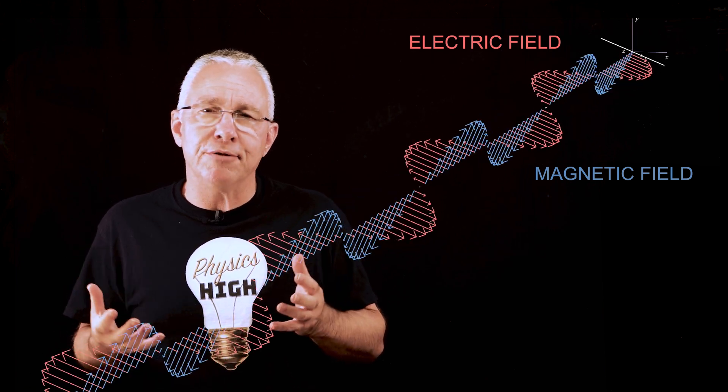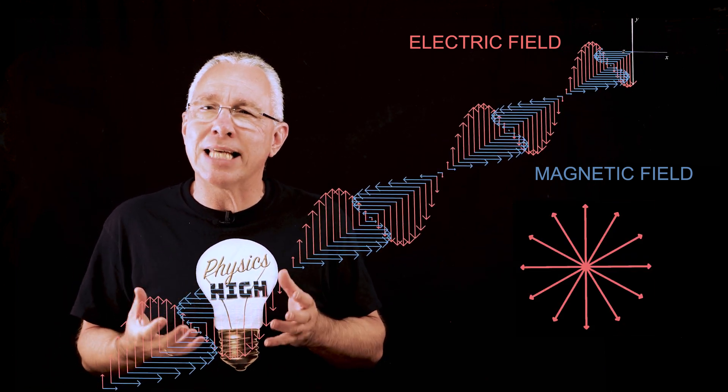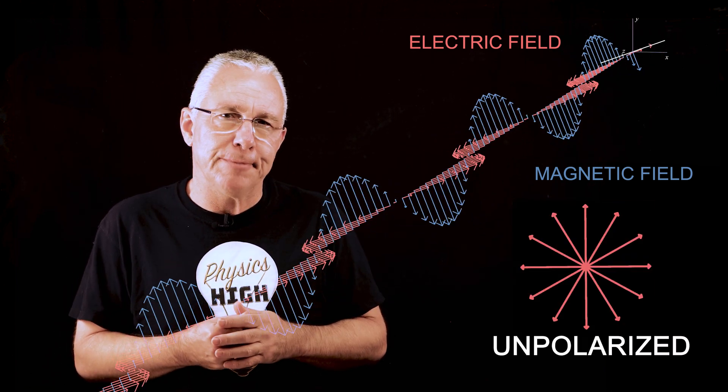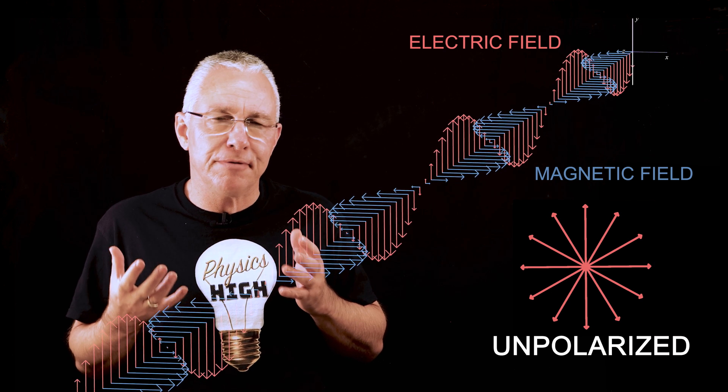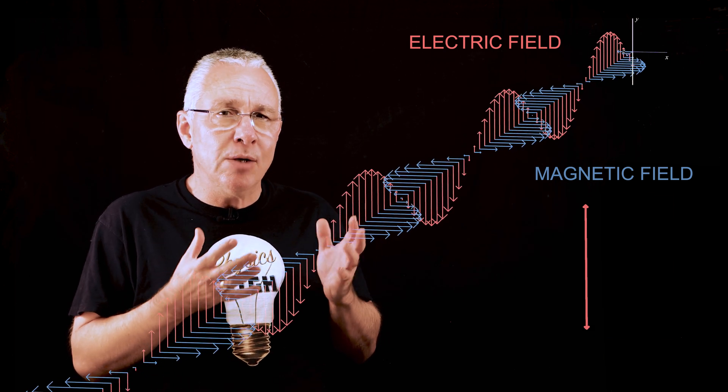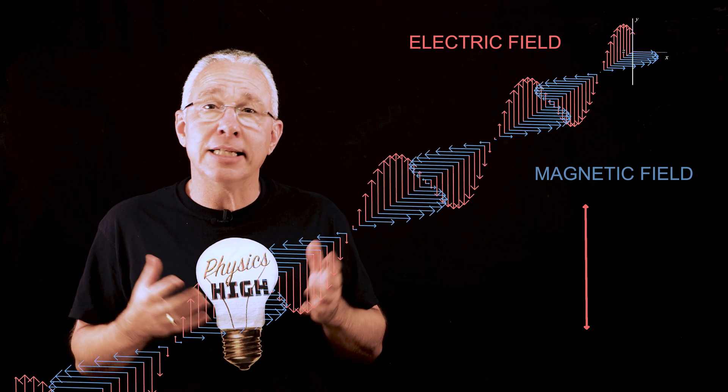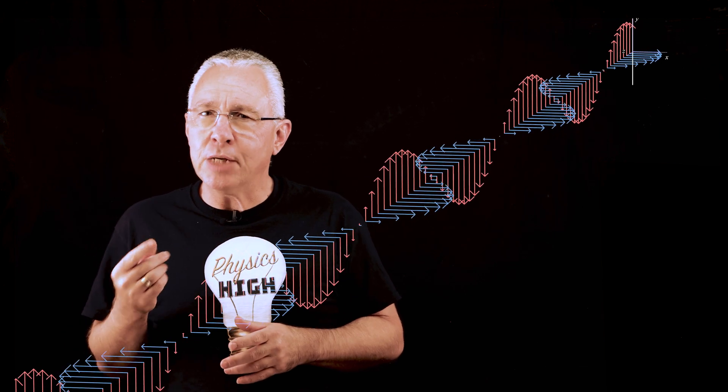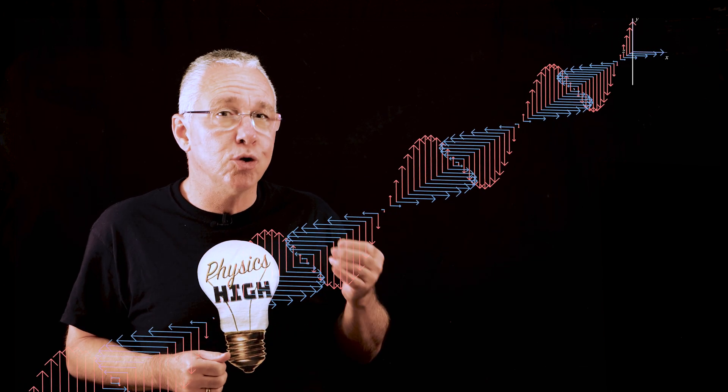When light contains waves in all orientations we say it is unpolarized. Now that is we have no preferential polar axis. Now if all waves align in one direction then the light is polarized. So how do we go from unpolarized to polarized?